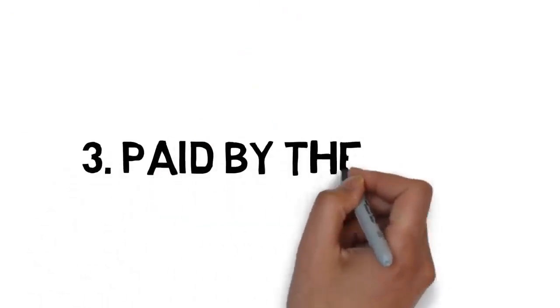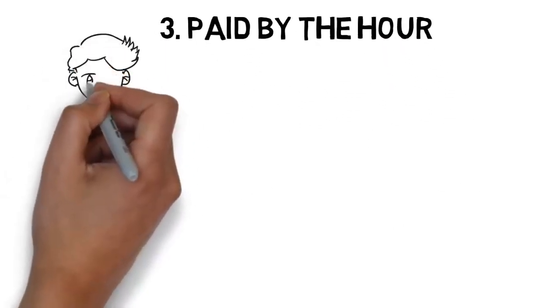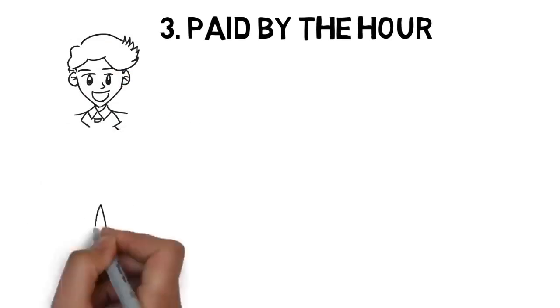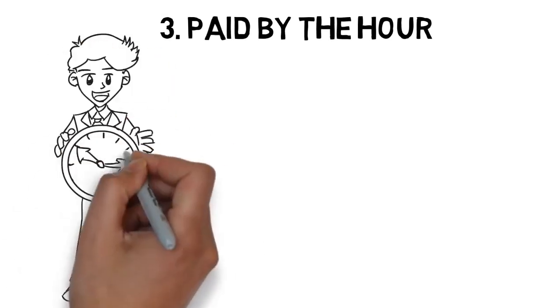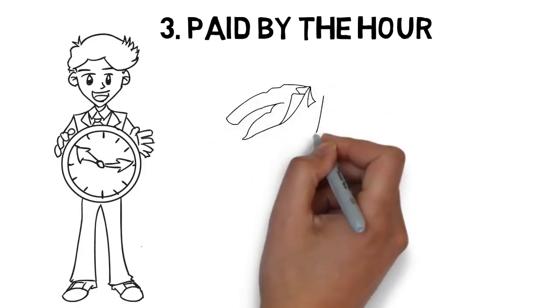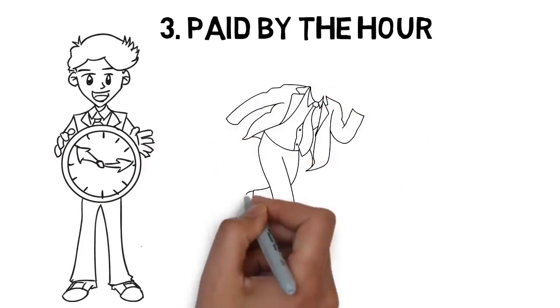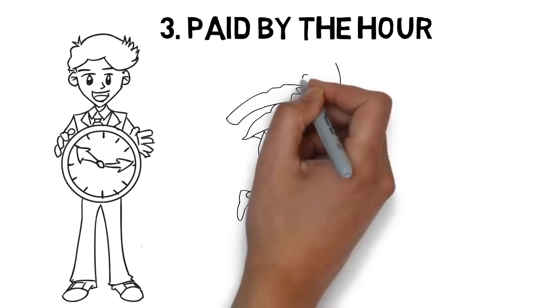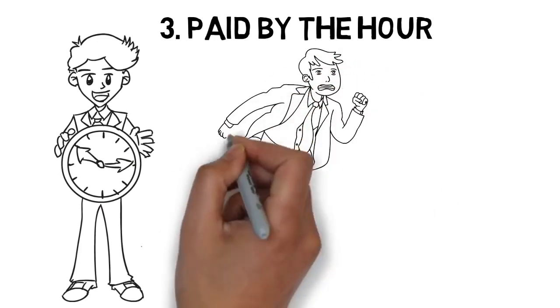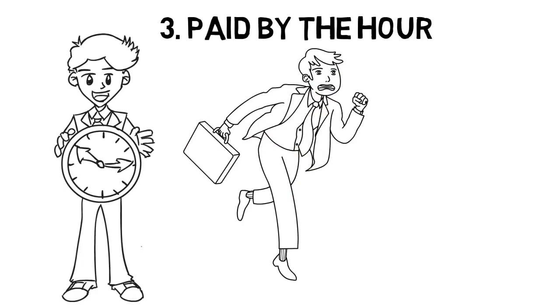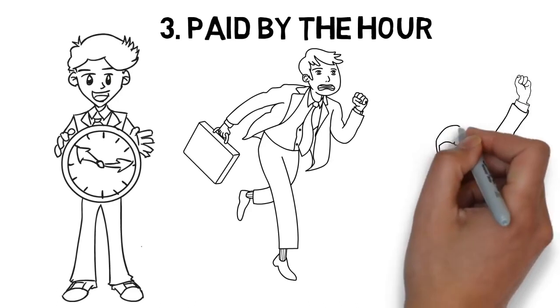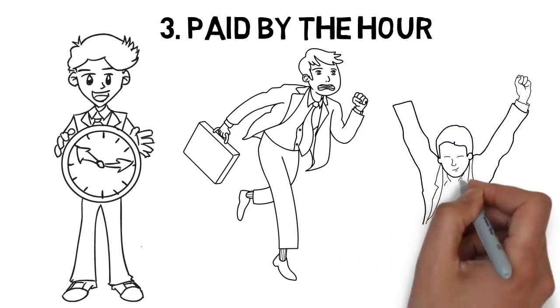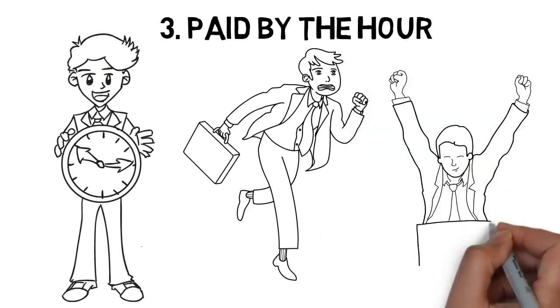3. Paid by the Hour. The vast majority of workers in the world today are paid by the hour, meaning they receive the same payment for every hour of every day no matter how good or bad of a job they're doing. While these types of jobs are much more stable and reliable, they often stifle your success because money is no longer motivating you to go the extra mile. It's no coincidence that most of the highest earning jobs don't pay by the hour, but instead pay according to performance.